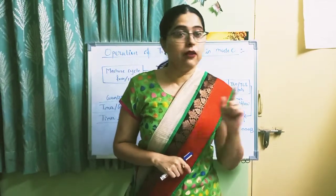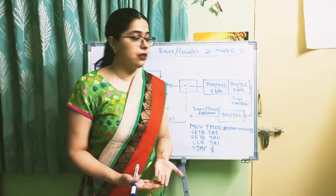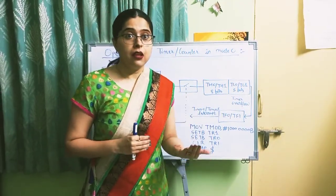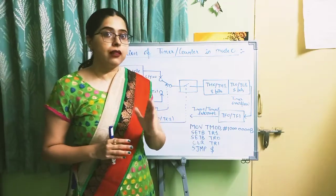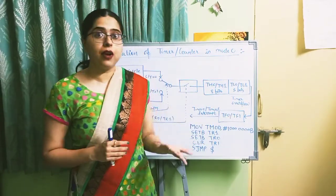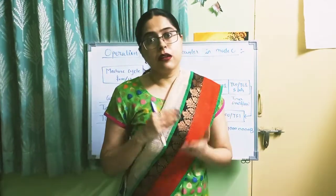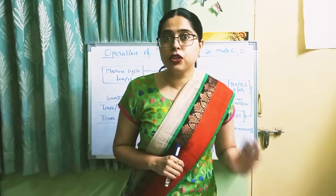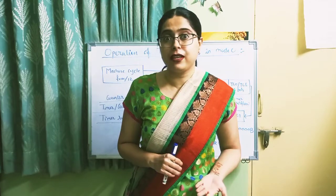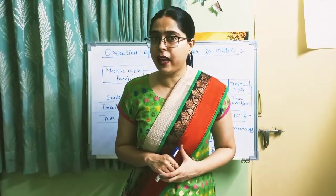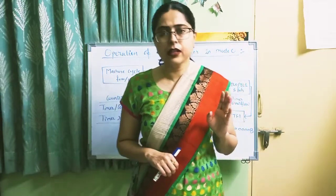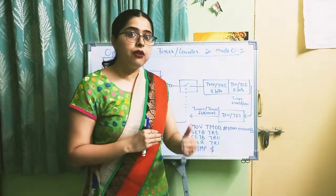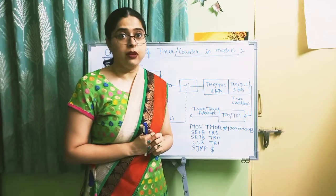When a rollover occurs in Timer 0 or Timer 1, the overflow flag TF0 (for Timer 0) or TF1 (for Timer 1) is set to 1. After the overflow flag is set, if interrupts are enabled and no other conditions block the interrupt, an interrupt is generated and vectored to address 000BH. When the interrupt starts executing, TF0 and TF1 are cleared back to 0.